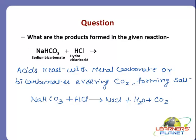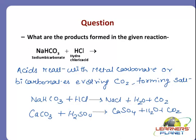Whenever a bicarbonate or carbonate reacts with an acid, carbon dioxide gas is evolved, water is formed, and a salt is produced. For example, calcium carbonate CaCO3 reacting with sulfuric acid H2SO4 gives CaSO4 plus H2O plus CO2.